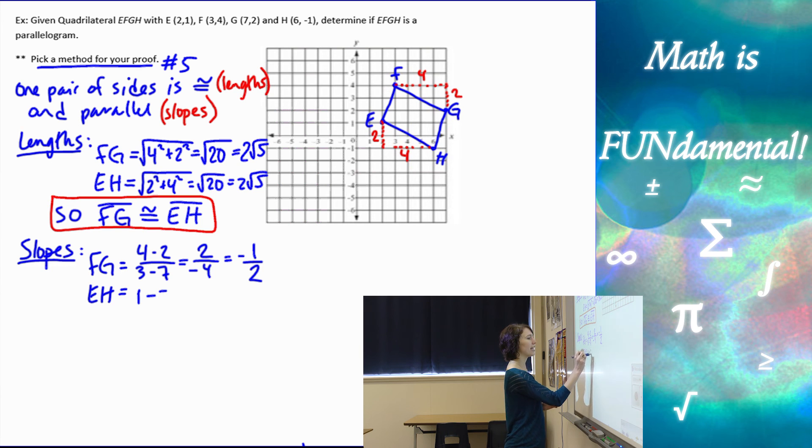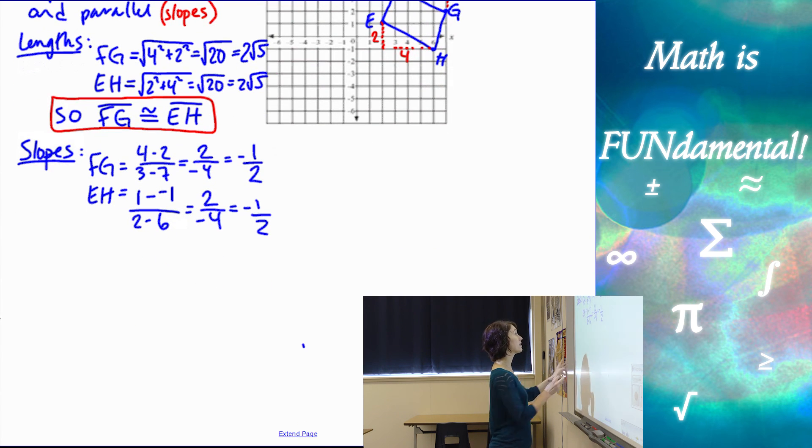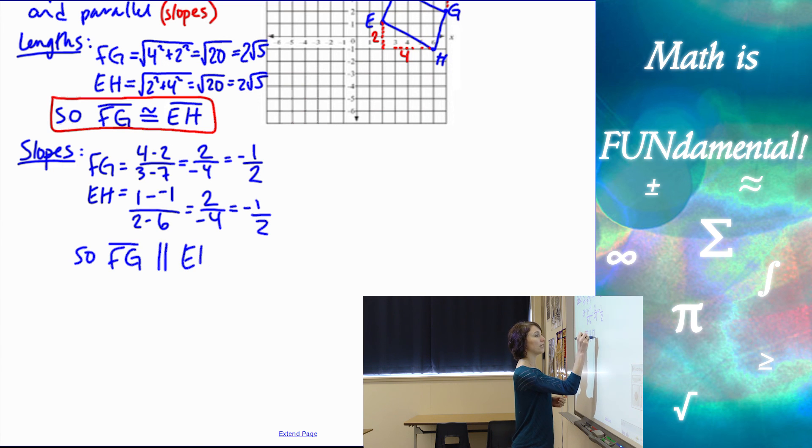For EH: 1 minus -1 over 2 minus 6, that's 2 over -4, which is also -1/2. We want to make our conclusion based on this information: FG is parallel to EH.